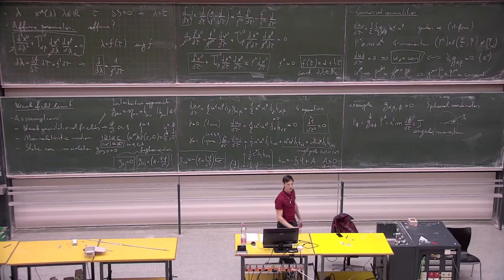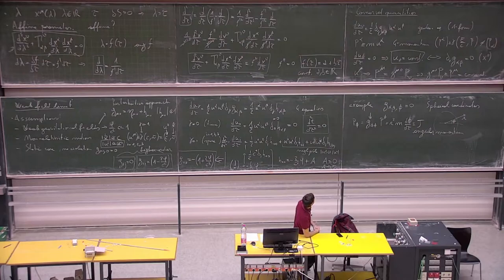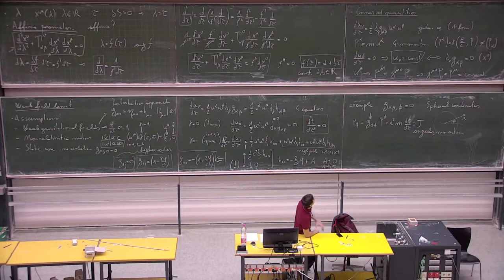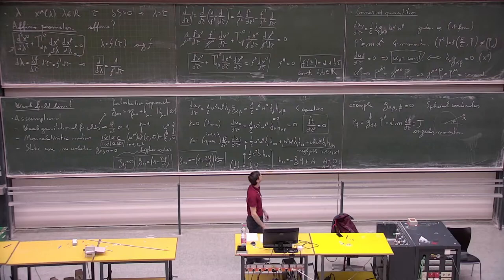A student raises a point: for all nu, even if you construct one side, the other components don't necessarily vanish. The instructor agrees and notes that since g_{alpha beta} terms are linked together, there may be a constraint that forbids cancellations — an interesting question worth checking.